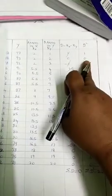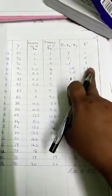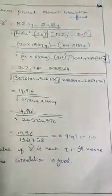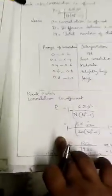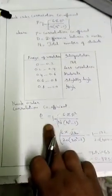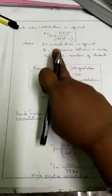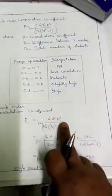The d-squared column values are computed. Sigma d-squared is then summed. The rank correlation formula (Spearman's) is: r equals 1 minus 6 times sigma d-squared, divided by n into (n-squared minus 1).